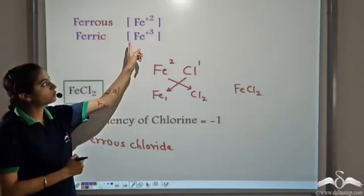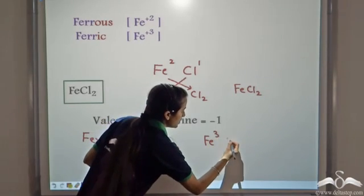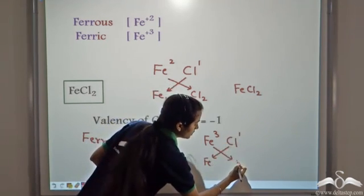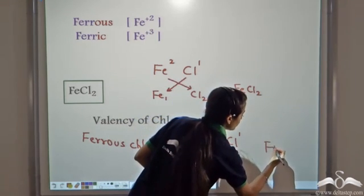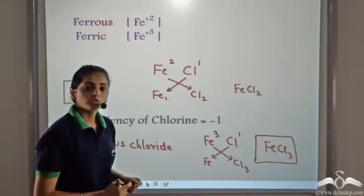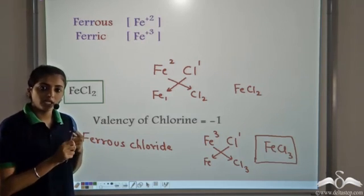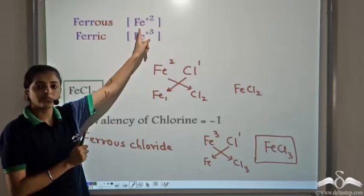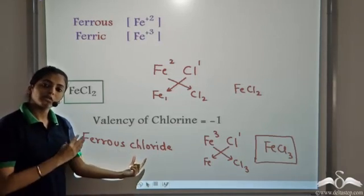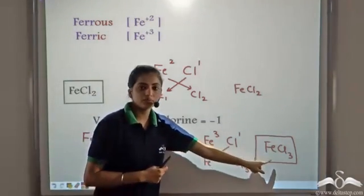If we use ferric instead of ferrous, the formula becomes FeCl₃. Interchanging the valencies of ferric (+3) and chlorine (-1) gives FeCl₃. So the formula of ferric chloride is FeCl₃. To summarize: when naming a compound using a metal that shows variable valency like iron — if it has a valency of +2, we call it ferrous, giving ferrous chloride; if it has a valency of +3, we call it ferric, giving ferric chloride.